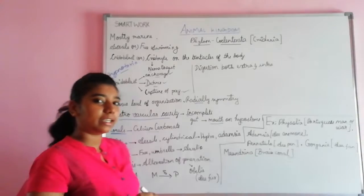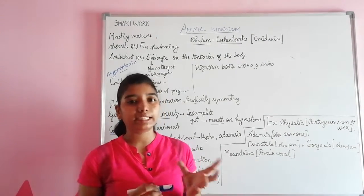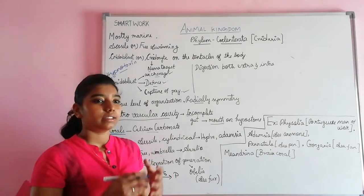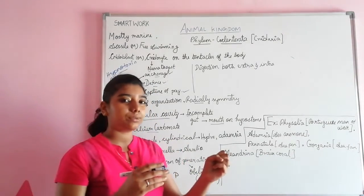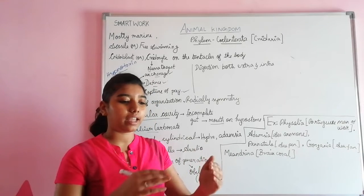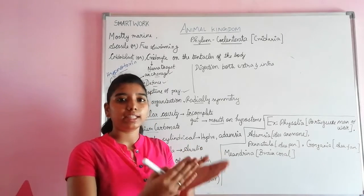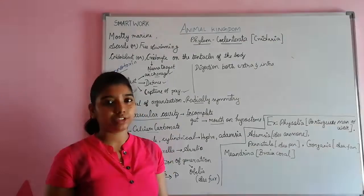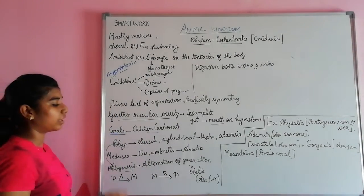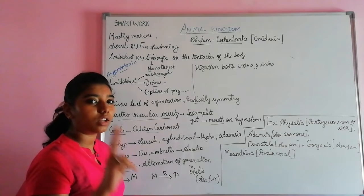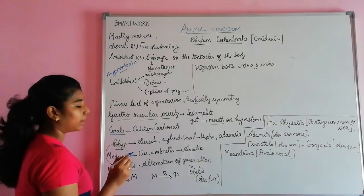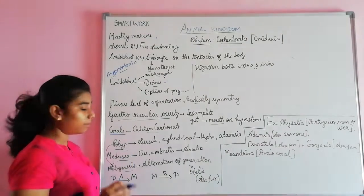There is an important term to discuss: metagenesis, which means alternation of generation. This means the asexual and sexual generations alternate with each other. The two forms involved are polyp and medusa.